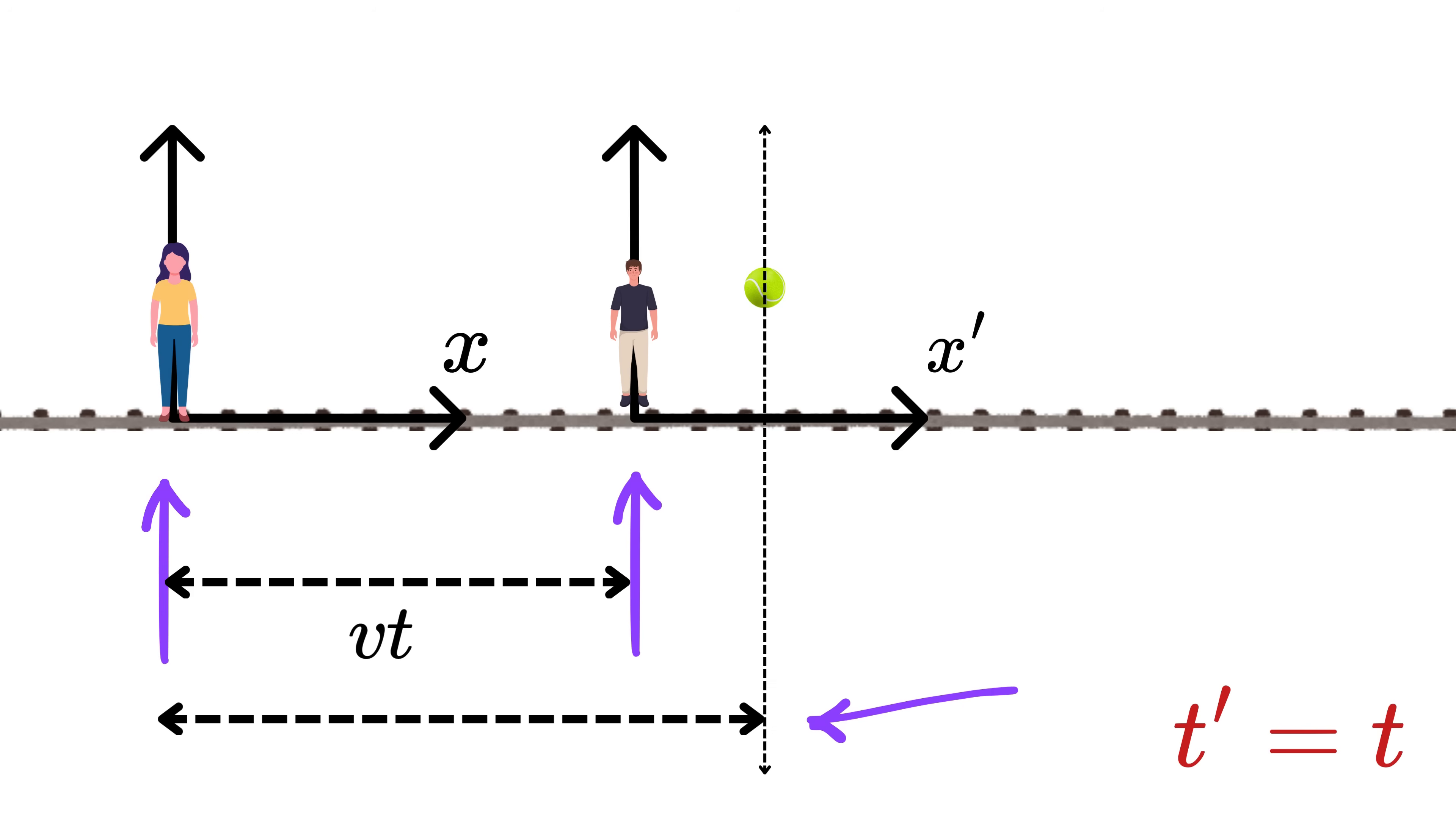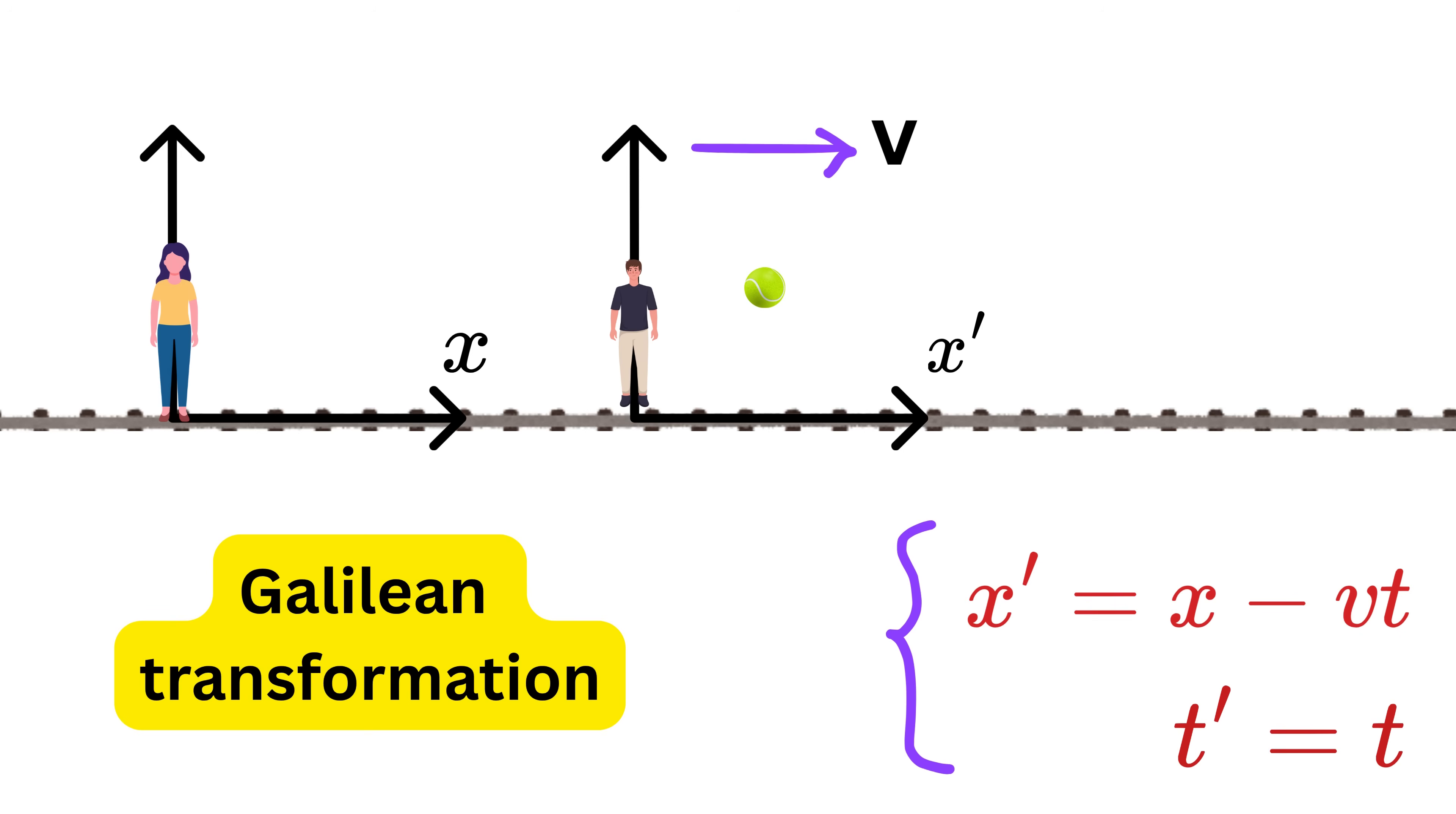So if we assume the ball is at this point somewhere inside the train, then this will be the position of the ball according to Alice, which will be x, and this will be position of the ball according to Bob, which will be x prime. So we can clearly see that x equals v times t plus x prime.